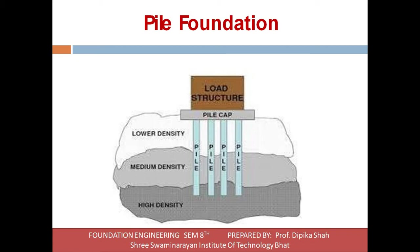A pile is a slender structural member made of steel, concrete, wood, or a composite material. A pile is either driven into the soil or formed inside by excavating a hole and filling it with concrete. So, pile can be made cast-in-situ or precast.